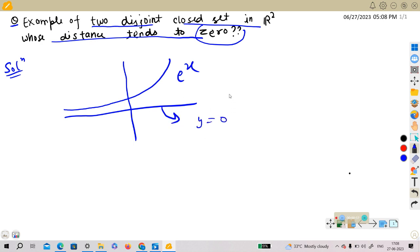So y equals zero. You can see that their distance becomes very, very close to zero as they approach, but they are never equal. They are two disjoint sets, and the distance becomes zero for large negative values of x.